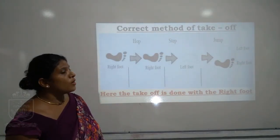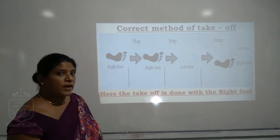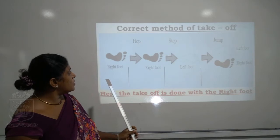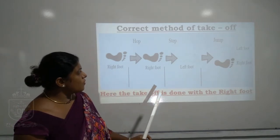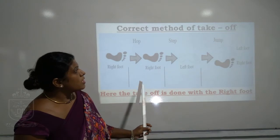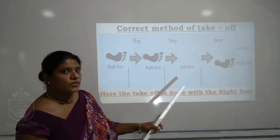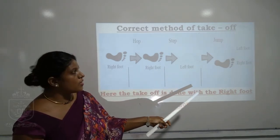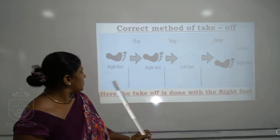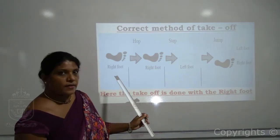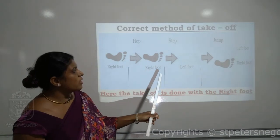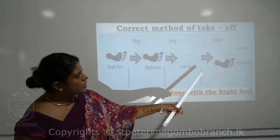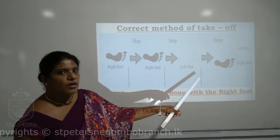The correct method of take-off: when we apply the take-off method, we use the right foot. First take-off, second take-off with the same foot. Third take-off, switch the foot to left. And finally, the jumping is done with both feet. So the sequence is right, right, left, then landing from both feet.